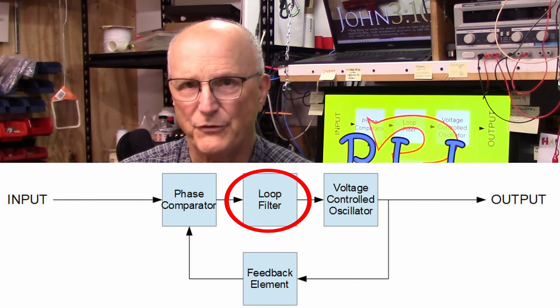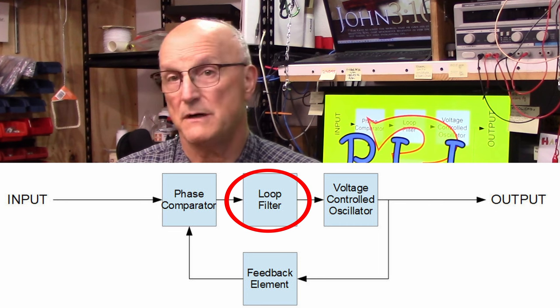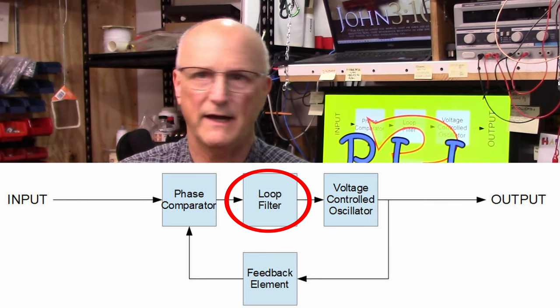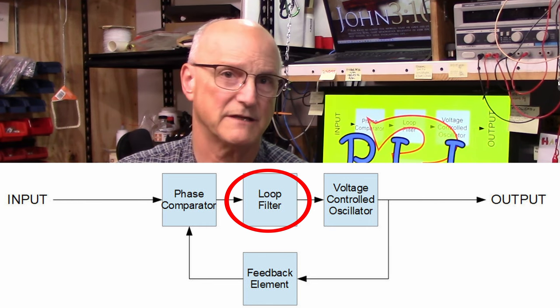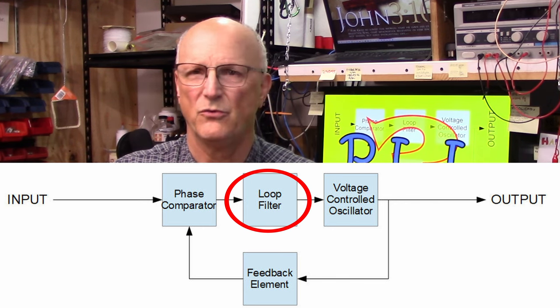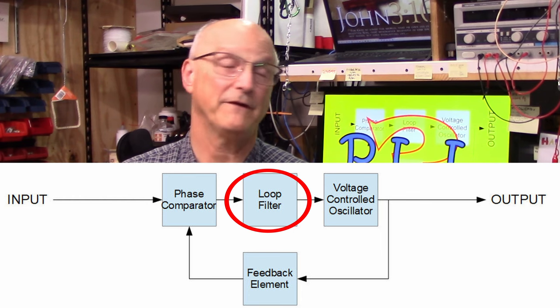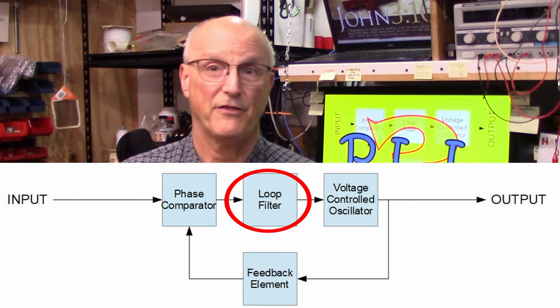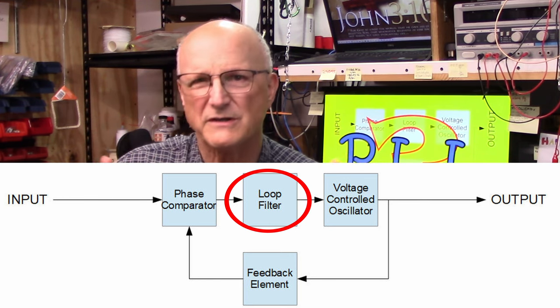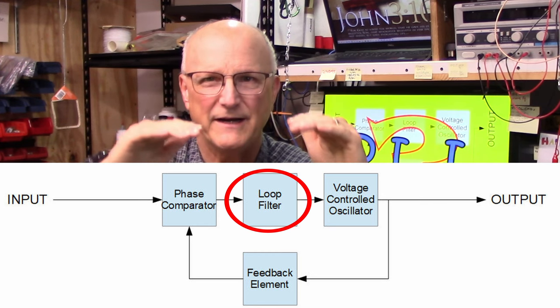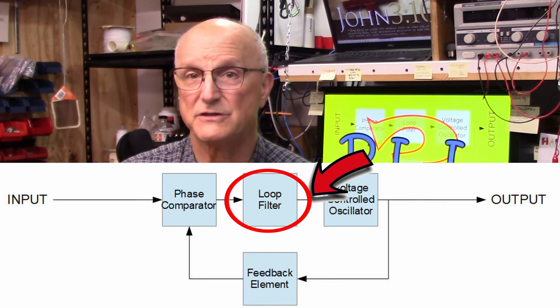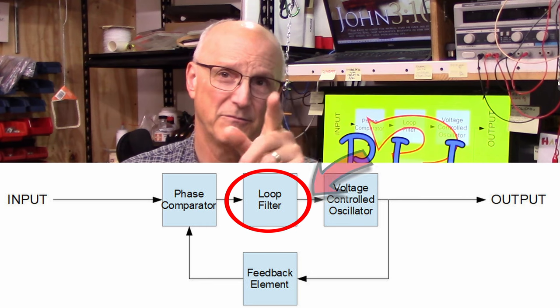Now we come to the filter block. This is needed to provide, among other things, overall stability to the system. Any time we have any kind of system involving feedback of some kind, one of our major concerns is stability. We don't want the entire system to run off into some infinite state. Thus, this filter helps us to ensure that the whole system is stable and settles into some nice finite equilibrium. The output of this circuit is the processed version of the voltage coming from the phase comparator.